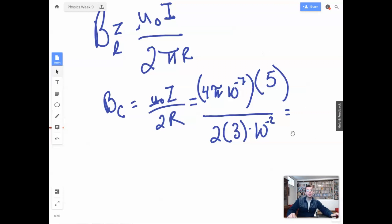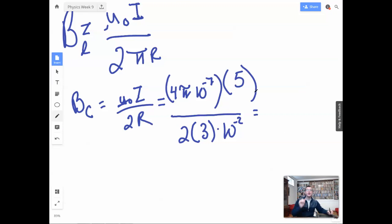I could do some of this in my head. Alright, so 4 times 5 is gonna be 20, divided by 2. Then we're gonna also have a 3.